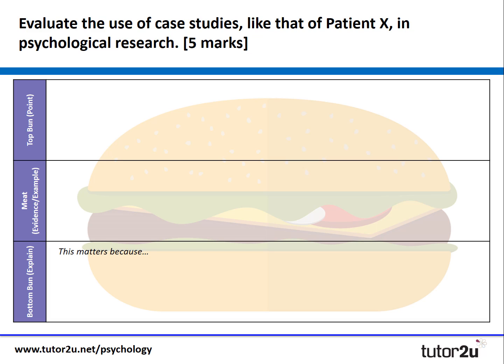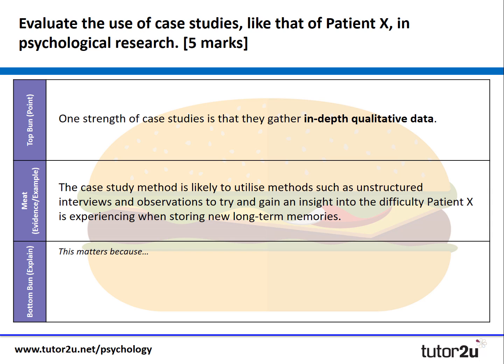Let's start by considering this strength: the in-depth qualitative data. You might start with 'one strength of case studies is that they gather in-depth qualitative data.' We then need to provide an example, and I would urge you, due to the nature of this question, to refer back to the example in the extract you're given. So you might say: 'the case study method is likely to utilise methods such as unstructured interviews and observations to try and gain an insight into the difficulty patient X is experiencing when storing new long-term memories.'